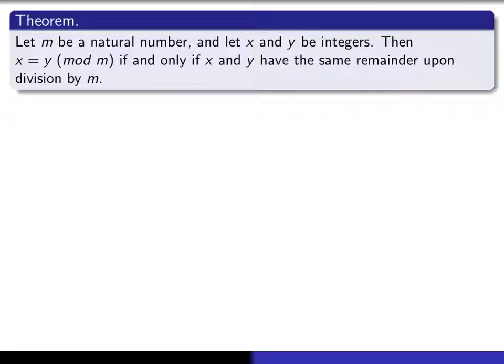We're going to prove that if x and y are any two integers, and m is a fixed natural number, then x is congruent to y modulo m if and only if both x and y have the same remainder upon division by m. What we mean by that is that if we apply the division algorithm to x and m, where m is the divisor, and we apply the division algorithm to y and m, again where m is the divisor, the remainder comes out the same in both cases.